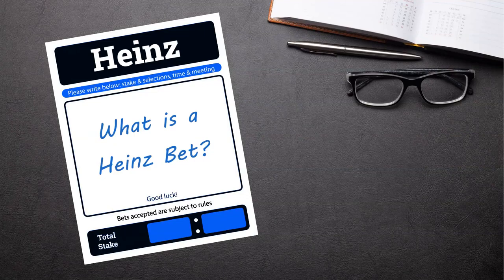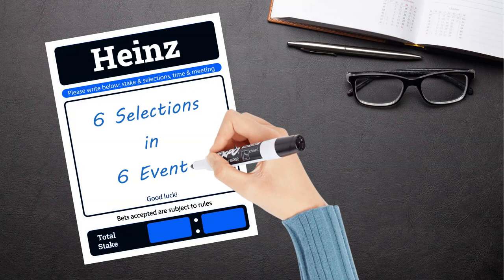What is a Heinz bet? A Heinz bet is a multiple bet wager on six selections in six events.